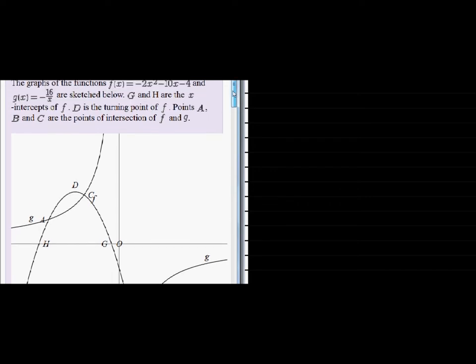C is on the graph of G as well as on the graph of F. That means we can either use the function formula for F and substitute the x that we are given, or we can use the function formula for G and substitute the x that we were given there. So I think G is going to be much easier.